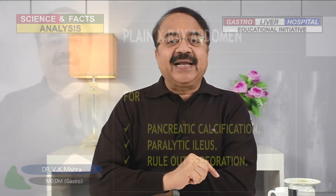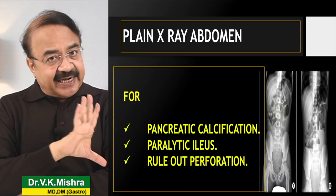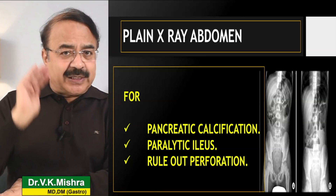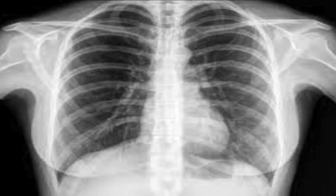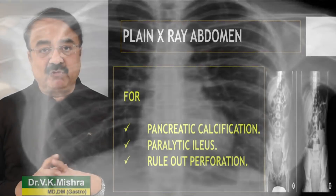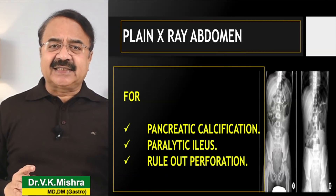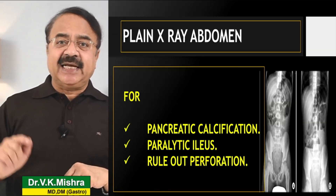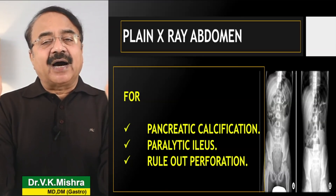Plain x-ray abdomen कराने की ज़रूरत पड़ती है — pancreatic calcification देखने के लिए, जो chronic pancreatitis में readily दिखाई देती है. Acute attack में अगर intestine सो जाए — paralytic ileus — तो उसे judge करने के लिए भी plain x-ray कराते हैं. Perforated ulcer या intestine का confusion हो तो gas under diaphragm plain x-ray पर दिखाई देगी, जो readily differentiate कर देती है.